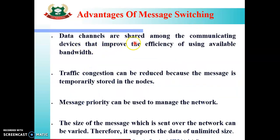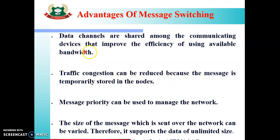Advantages: Data channels are shared among the communicating devices, which improves the efficiency of using available bandwidth — the bandwidth is shared among multiple devices, so we can fully and efficiently utilize it. Traffic congestion can be reduced because the message is temporarily stored in the node. Since the channel is shared by many devices, congestion is controlled by temporarily storing messages in the node and forwarding them once traffic is released.